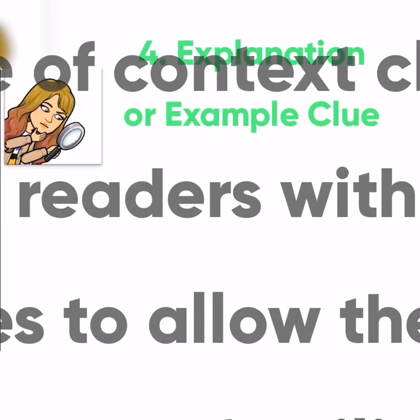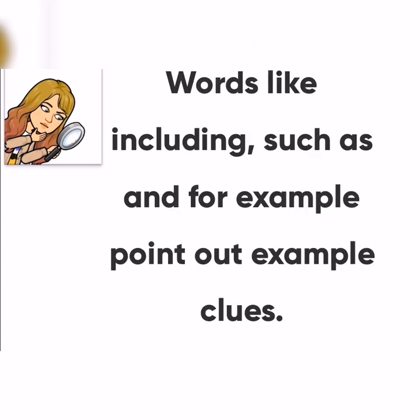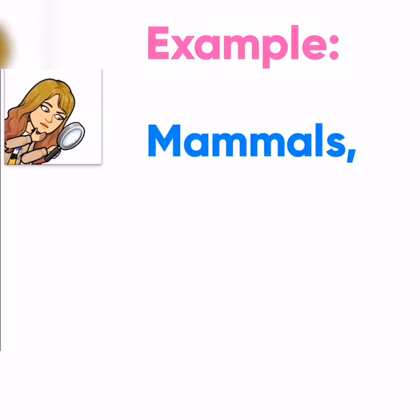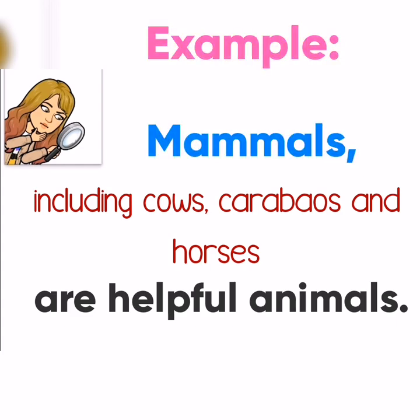The fourth type of context clue is the explanation or example clue. It is a type of context clue that provides readers with varying examples to allow them to fully examine the unfamiliar word. Words like 'including,' 'such as,' and 'for example' point out example clues. For example, 'Mammals, including cows, carabaos, and horses, are helpful animals.' The word 'mammals' is the difficult term, and cows, carabaos, and horses are its examples.